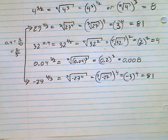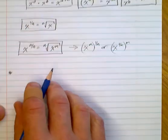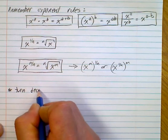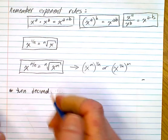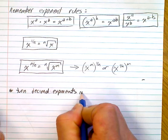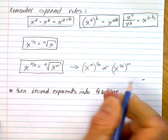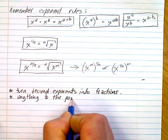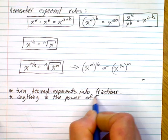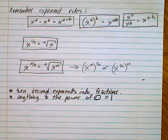Two main things to remember: first, turn decimal exponents into fractions. Second, remember that anything to the power of 0 is equal to 1. Try the questions out of the book, and we'll see how you do.